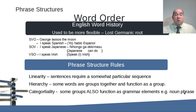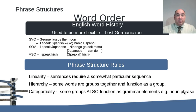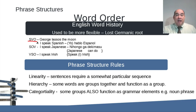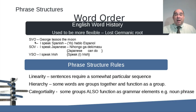The first thing I want to do is jump into this whole idea of word order. Language is always broken down into the order of the words — the sequence. It's very important. In English, we have the subject-verb-object type of sequence. For example, 'George lassos the moon,' or 'I speak Spanish — yo hablo español.' Subject-verb-object. That's the basic structure that we have, and it's probably one of the more popular versions.